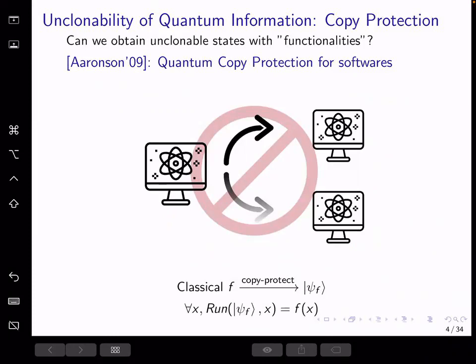And we wonder, can we leverage such a scheme to encode more complex clonable classical information into unclonable quantum information? Arison in 2009 put forward quantum copy protection. A copy protection algorithm turns a classical function f into a quantum state. This state can be used to run on any input such that you get the same evaluation as the original function.